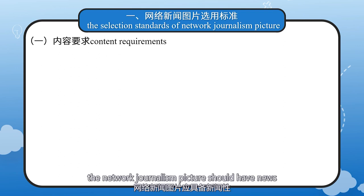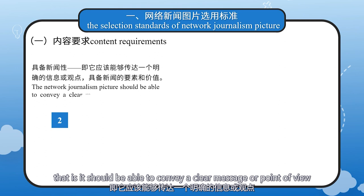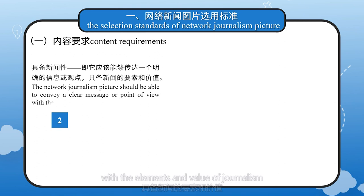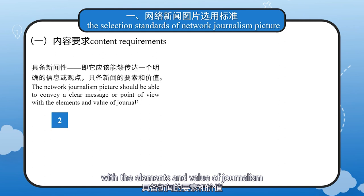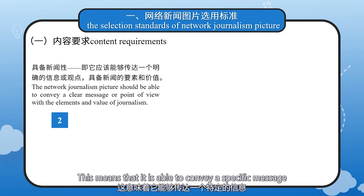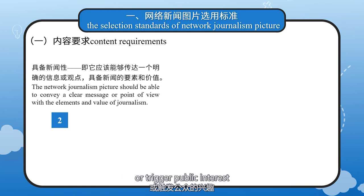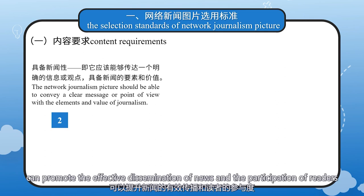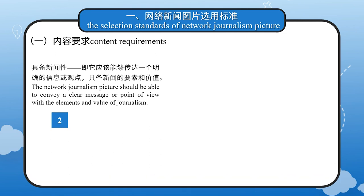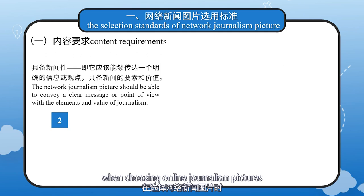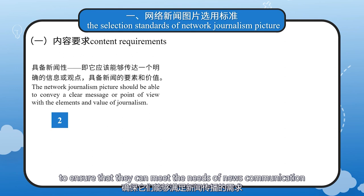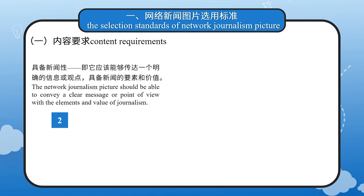In addition, the network journalism picture should have news value — that is, it should be able to convey a clear message or point of view with the elements and value of journalism. This means that it is able to convey a specific message or trigger public interest. A good journalism picture can promote the effective dissemination of news and the participation of readers. Therefore, when choosing online journalism pictures, we need to choose carefully to ensure that they can meet the needs of news communication.